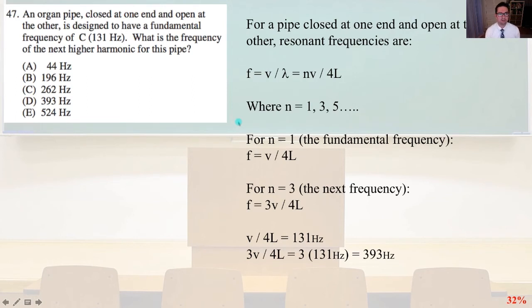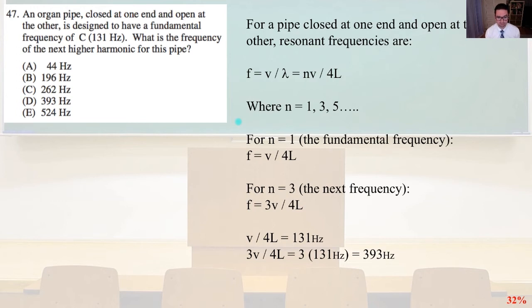Problem 47. An organ pipe enclosed at one end and open at the other is designed to have a fundamental frequency of 131 Hz. What is the frequency of the next higher harmonic? For a pipe closed at one end and open at the other, resonant frequencies are f = nv / 4L, where n = 1, 3, 5, ... (odd integers only). For n = 1, f = v/4L = 131 Hz. The next harmonic is n = 3, giving f = 3 × 131 = 393 Hz. That is answer D.